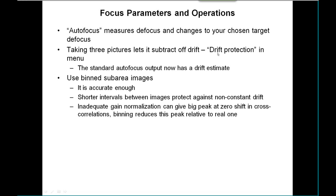Another important point about focusing: the recommendation is to use binned sub-area images, and this is important for several reasons. First, it's accurate enough because there's sub-pixel interpolation in the binning, and you have a several-pixel shift between the images you're measuring anyway. Second, if you have any kind of non-constant drift — such as after tilting — the drift is dying away slowly. You want to take those focus pictures as fast as possible with the shortest intervals between them, and binning along with using sub-areas makes that happen.